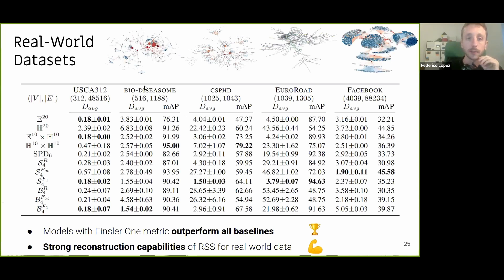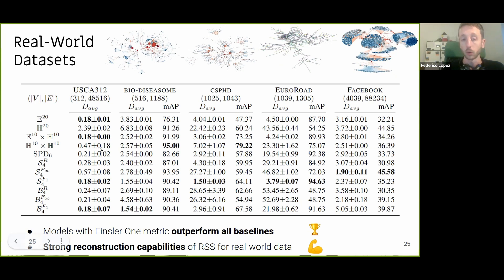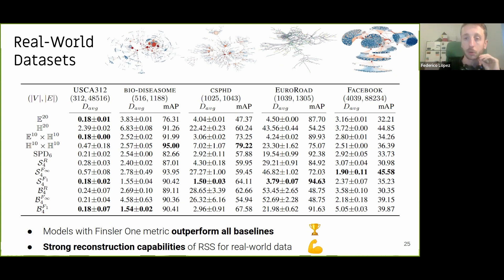Looking at real-world datasets — a graph of cities in California, diseases sharing genetic overlap, PhD students and advisors, cities in Europe, and a Facebook social network — we see very similar results. With the Riemannian metric, we achieve very good performance across many different graphs. With the Finsler one metric, we can outperform all baselines. This shows the strong reconstruction capabilities of symmetric spaces also for real-world data — it is not something that works only on toy experiments.